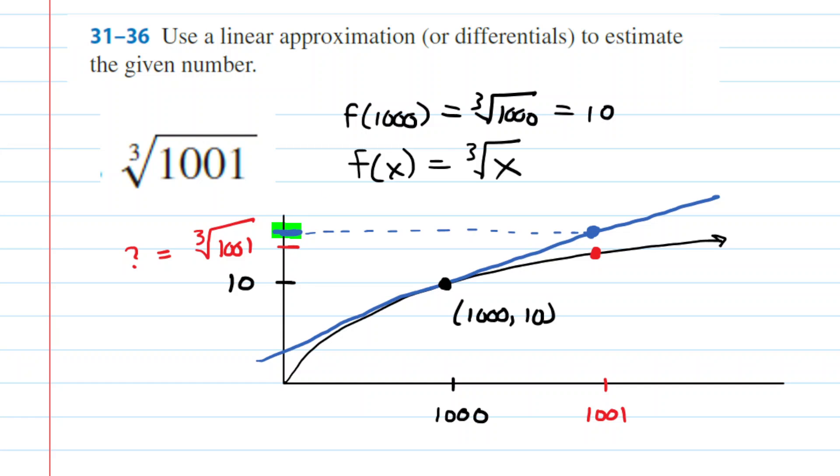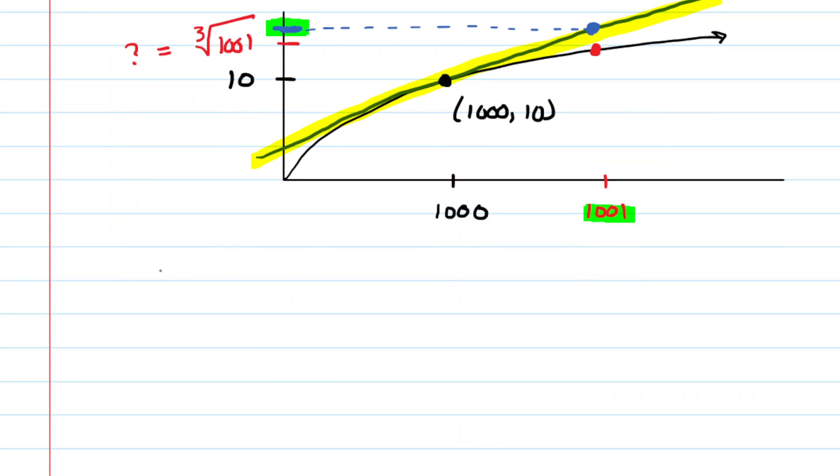So what we'll do, and here comes the punchline, we will find the equation of this tangent line. Once we have it, we'll plug 1,001 into that equation. We'll slide over, we'll get the y value, and that y value will be very close to the cube root of 1,001. So on to our goal, finding the equation of that yellow tangent line.